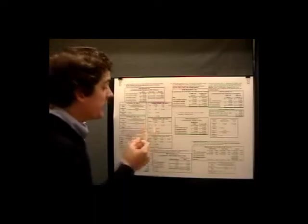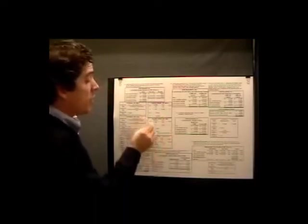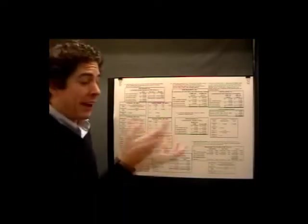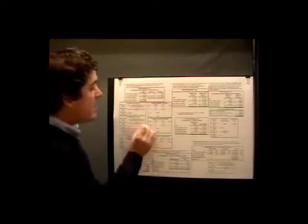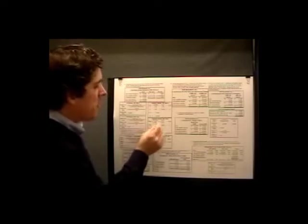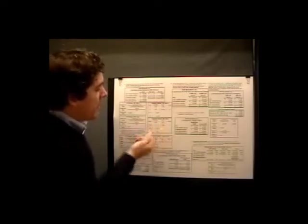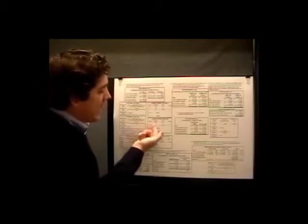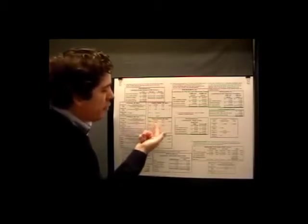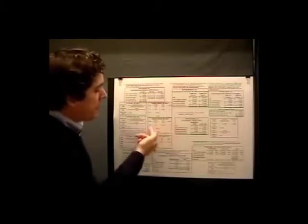Under the equation method for break-even units, sales equals variable cost plus fixed cost plus profit, where q equals volume. So 10q equals 6q plus $20,000, because $10 times quantity gives sales and $6 times quantity gives variable cost. Solving for q, we get 4q equals $20,000, so q equals 5,000 units.